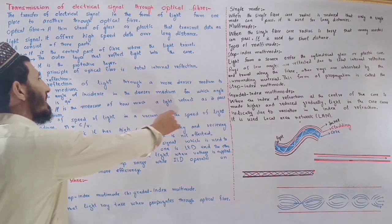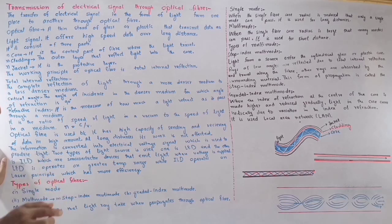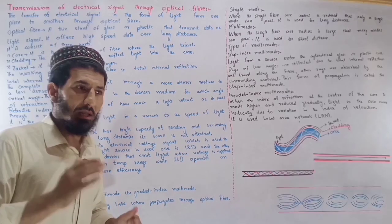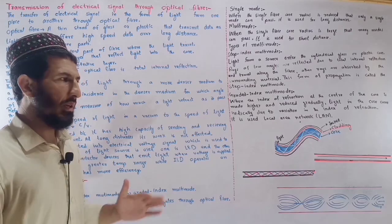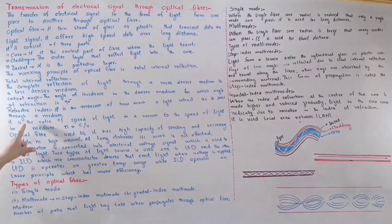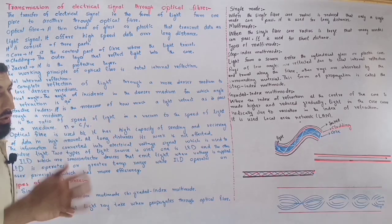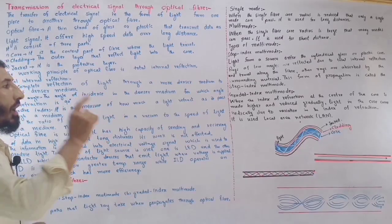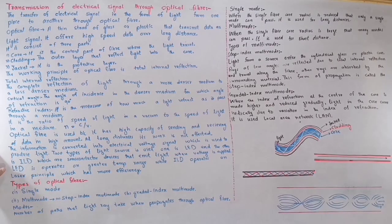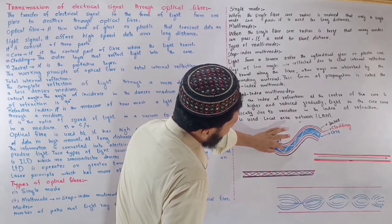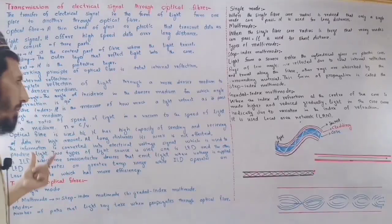The refractive index is the measure of how much light refracts as it passes through a medium. It is the ratio of the speed of light in vacuum to the speed of light in the medium: n = c/v. In optical fiber, the core has a higher refractive index and the cladding has a lower refractive index.